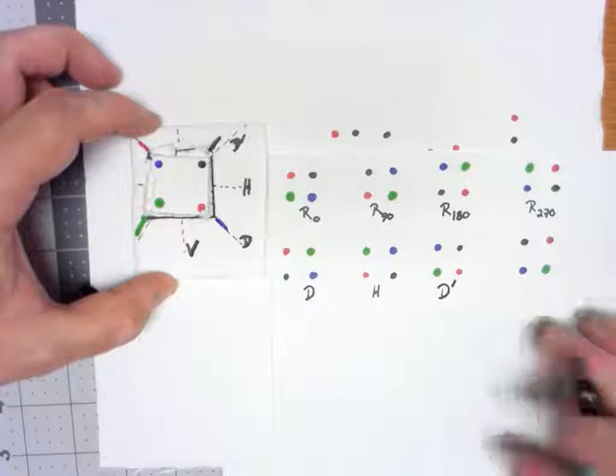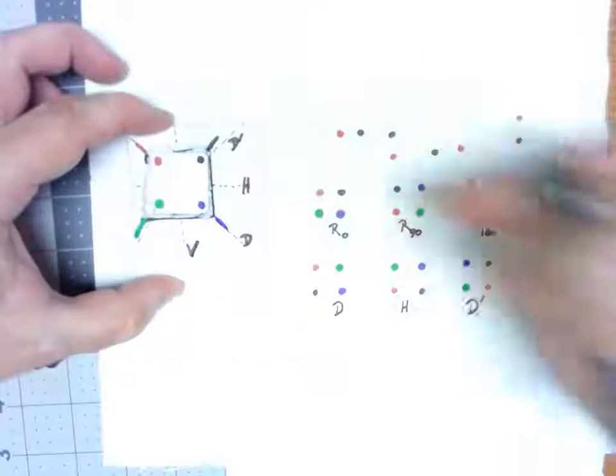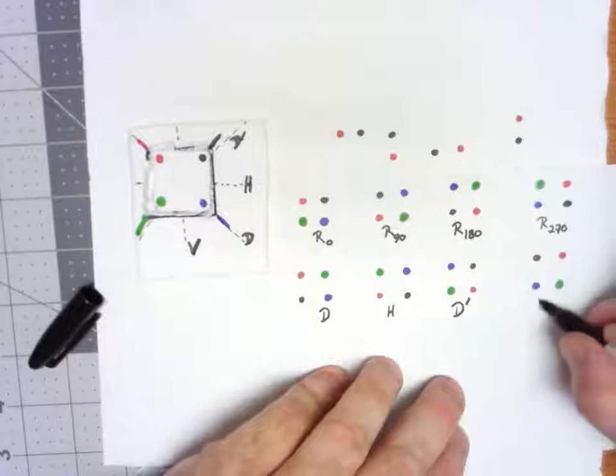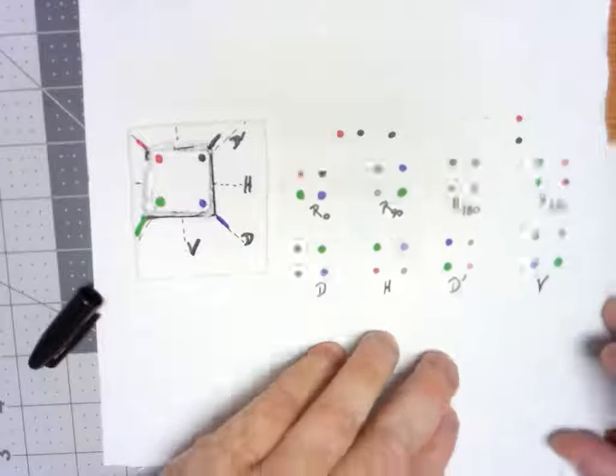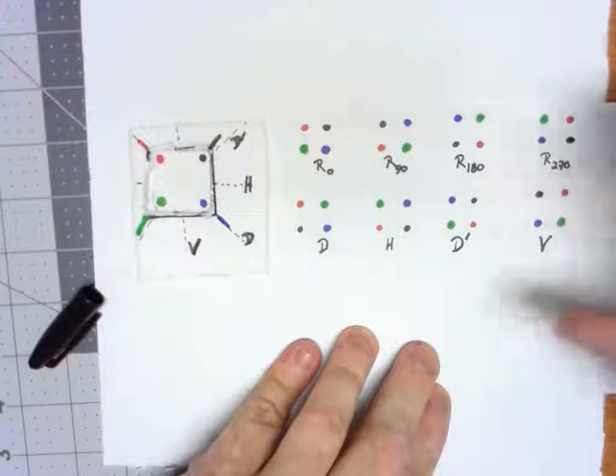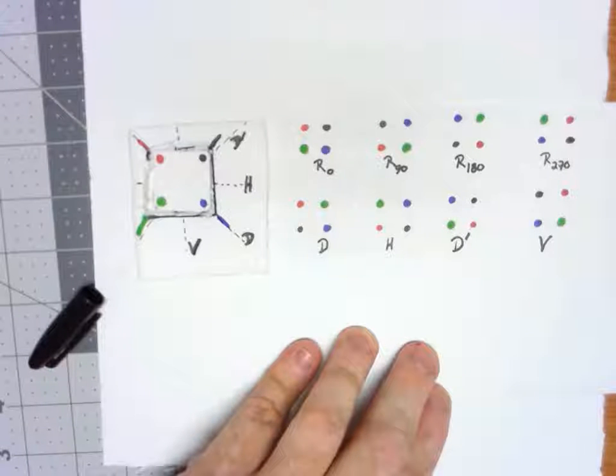And then finally here, the red and the black have flipped, the green and the blue have flipped. So that's flipping across the vertical. Now, the question is, are these all the ways we can do it? Are there, could there possibly be, some others? Let's do just a little bit of combinatorics here.